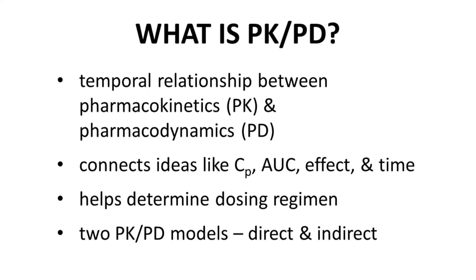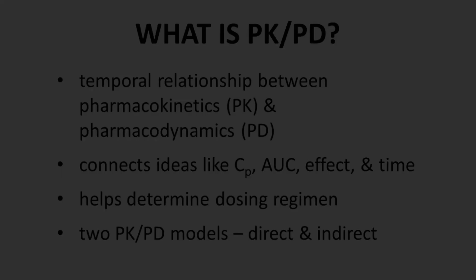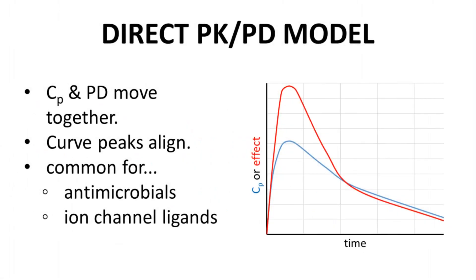There are two PKPD models: the direct and indirect model. In the direct PKPD model, both CP and PD — the effect — move together. If CP rises, then effect rises. If CP falls, then effect falls.